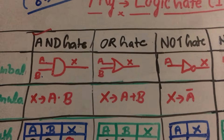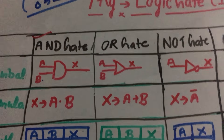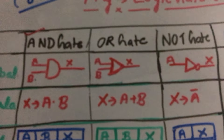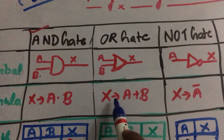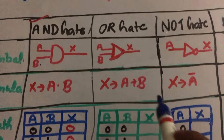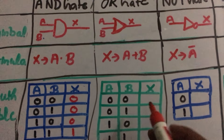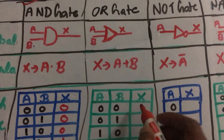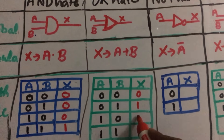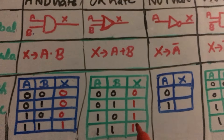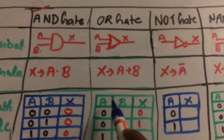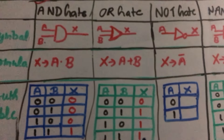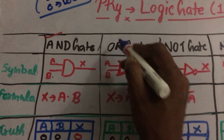Next is the OR gate. The OR gate has its own symbol, and the formula is X = A + B. For the truth table: if both inputs are low, then A + B = 0; 0 + 1 = 1; 1 + 0 = 1; and 1 + 1 = 1. This means in the OR gate, if both inputs are low then the output is low; otherwise the output is always high.